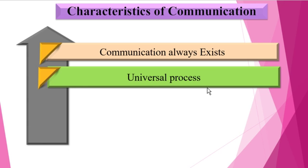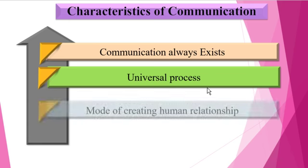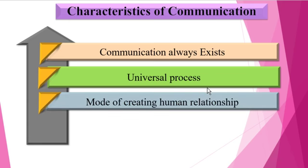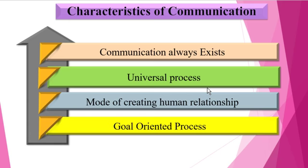The seventh characteristic is that communication is a universal process — it is essential in all types of organizations and at all levels of management. The eighth characteristic is that communication is a mode of creating human relationships — it creates mutual understanding by giving information, and business organizations can develop relationships with the help of communication. The ninth and last characteristic is that communication is a goal-oriented process — it can be effective only when both the sender and receiver are aware of the goal of communication.